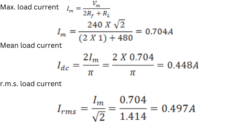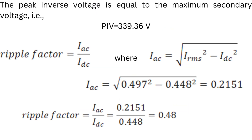The RMS load current Irms = Im / √2 = 0.704 / 1.414 = 0.497 amperes. The peak inverse voltage (PIV) equals the maximum secondary voltage — this is the maximum reverse voltage appearing across the diode. Peak inverse voltage equals 339.36 volts.